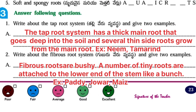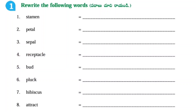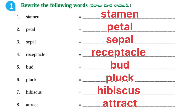Next, Worksheet number four. Concept: Parts of a flower. First one, rewrite the following words: Stamen, petal, sepal, receptacle, bud, pluck, hibiscus, attract.